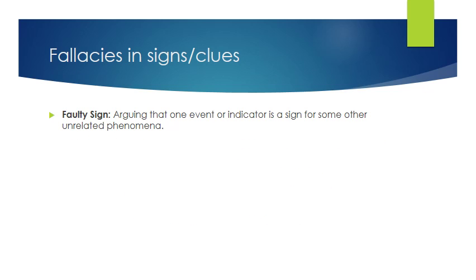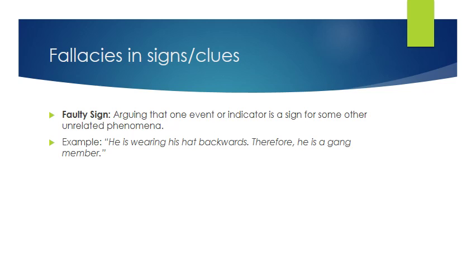The faulty sign fallacy involves arguing that one event or indicator is a sign for some other unrelated phenomenon — being mistaken about signs and what they mean. A classic example: 'he's wearing his hat backwards, therefore he's a gang member.' Just because somebody wears their hat backwards doesn't necessarily mean they're a gang member. That's just one indicator, but there are many more needed to determine gang membership — relying on just one and drawing that whole conclusion is faulty.